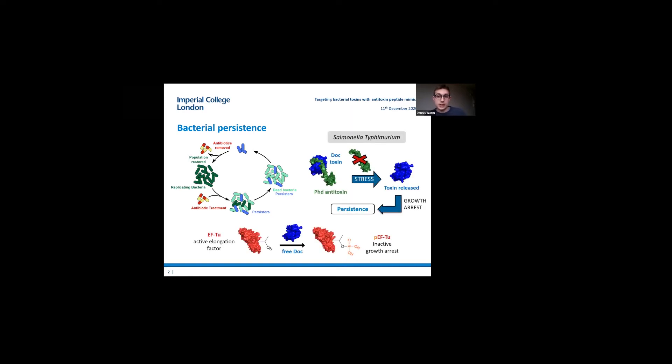One of the biochemical mechanisms underlying persistence formation are toxin-antitoxin systems. We are interested in the PhD antitoxin-Doc toxin system in Salmonella. In a normal state, the antitoxin forms a stable complex with the toxin. But upon stress, for example antibiotic treatment, the antitoxin can be degraded which releases the toxin. The toxic activity then leads to growth arrest and induces the persister state in some of the bacteria.